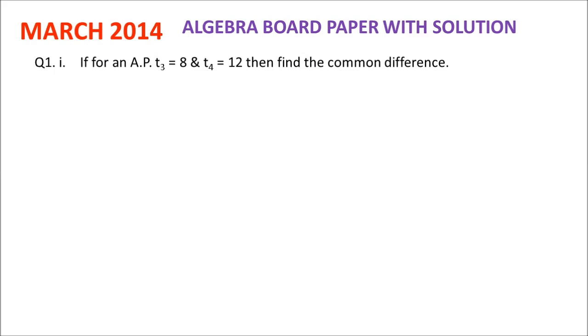If for an AP, third term is 8 and fourth term is 12, then find the common difference.